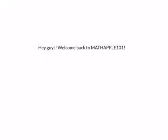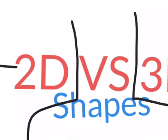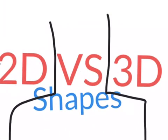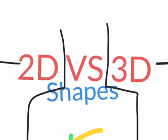Hey guys, welcome back to MathApple 101, and today we are going to be talking about 2D vs. 3D shapes. In this video, we are going to distinguish and find the difference between 2D and 3D shapes. We'll talk about what is a 2D shape and what is a 3D shape, and what are the differences. Now let's get right into the video.